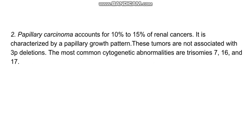Papillary cell carcinoma is not associated with any 3p deletions and is associated mostly with trisomies of chromosomes 7, 16, and 17. As the name suggests, it has a papillary growth pattern, and psammoma bodies can sometimes be seen in this type of tumour. Other types include chromophobe and collecting duct carcinoma.